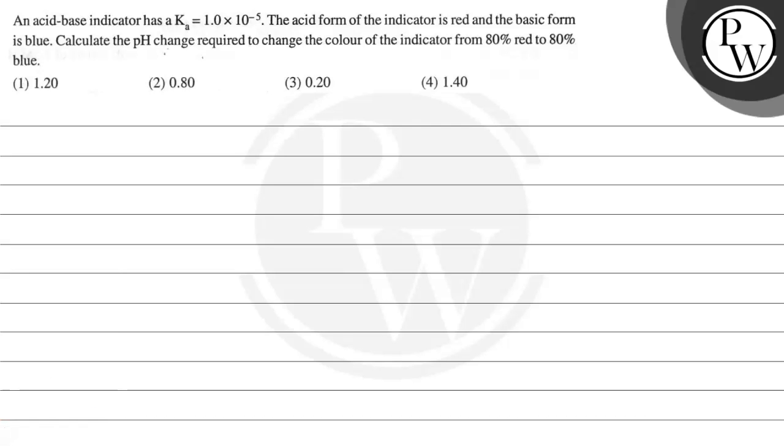Hello Bachcho, let's read this question. The question says an acid-base indicator has Ka equals 1 into 10 raised to the power minus 5. The acid form of the indicator is red and the basic form is blue. Calculate the pH change required to change the color of the indicator from 80% red to 80% blue.